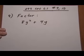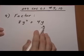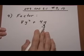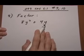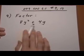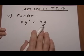Section 6.1, numbers 9 and 10. Here we have an expression and it has two terms. We're going to want to factor out the greatest common factor of the two terms.